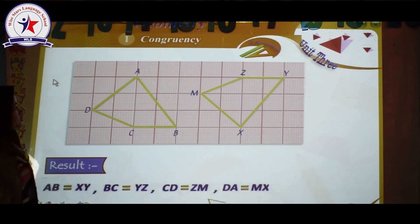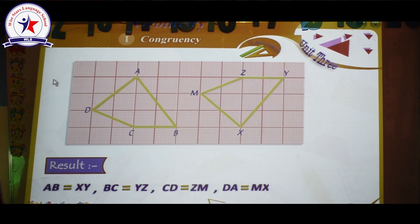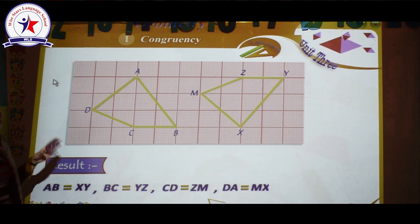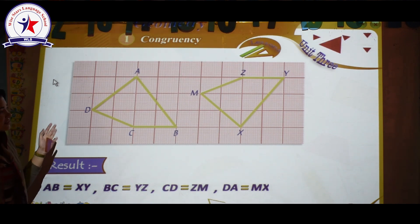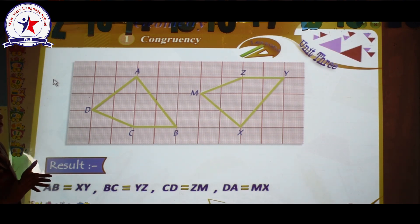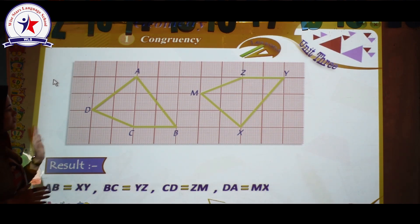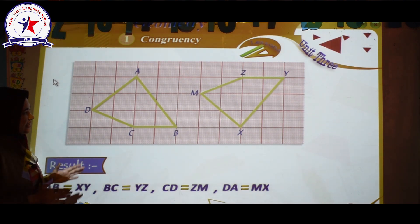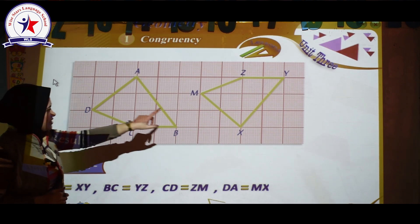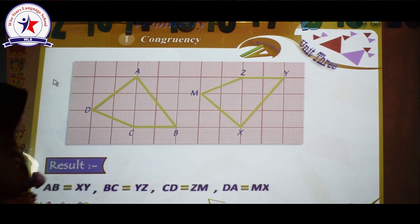Hi guys, it's my pleasure to be with you today. Our lesson today is congruency. Two shapes can be said to be congruent if they have the same size and the same shape — they are exactly the same.